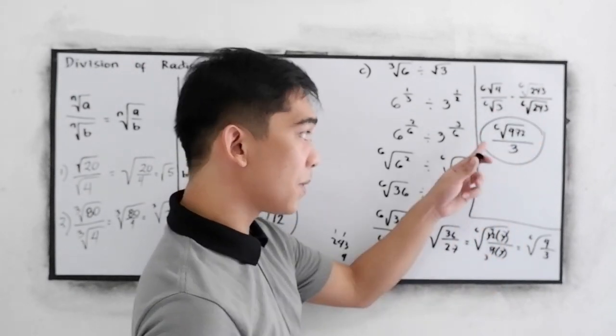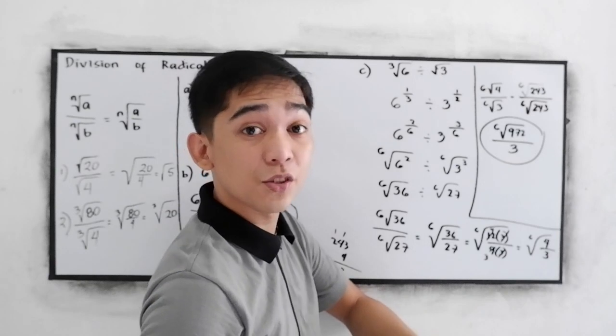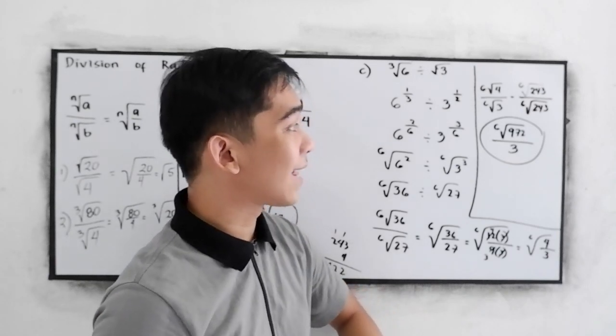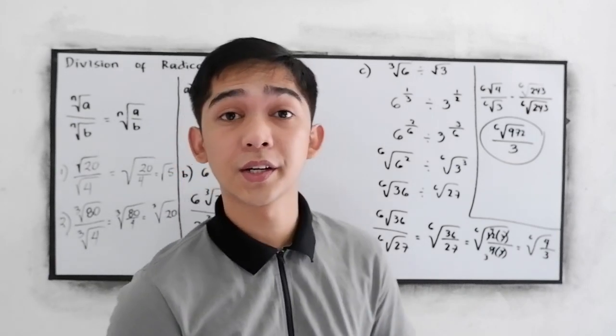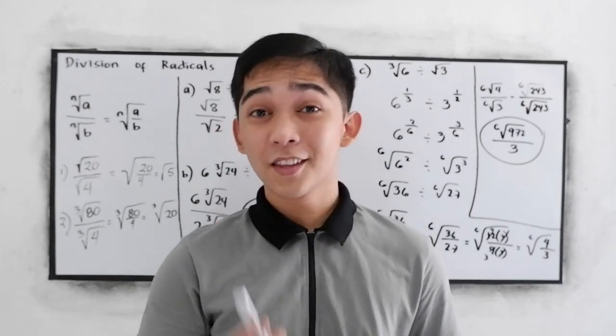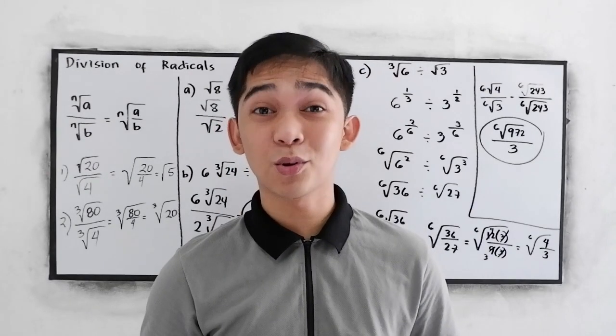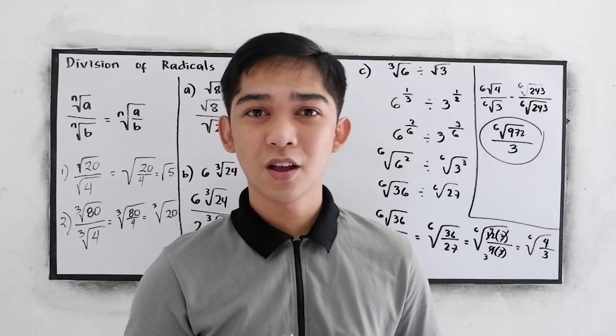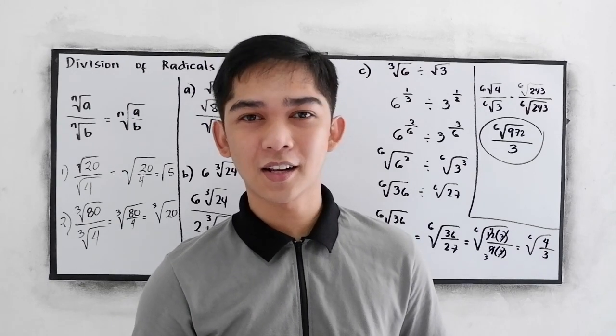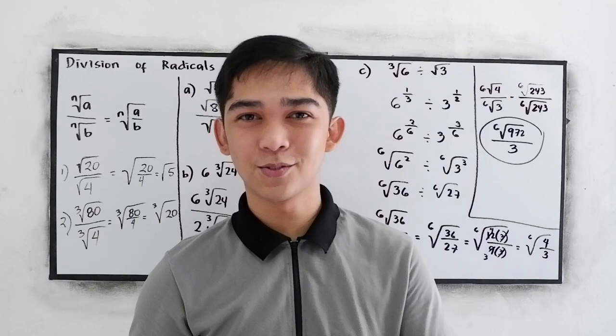This will be our final answer, 6 root of 972 over 3. Thank you for watching Senior Pablo TV. And for our next video, Solving Radical Equations. See you.